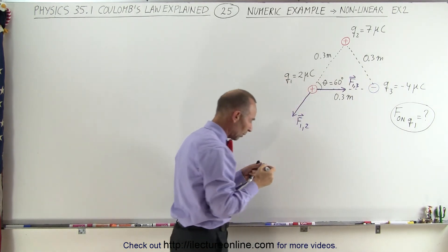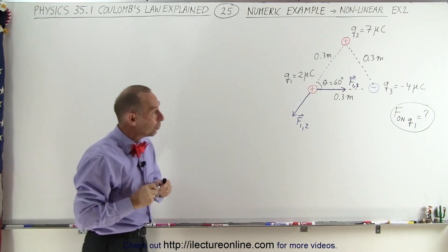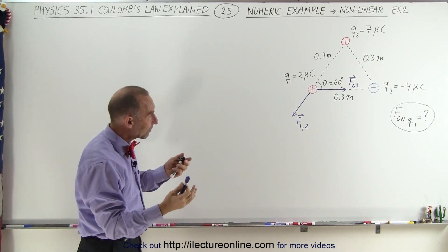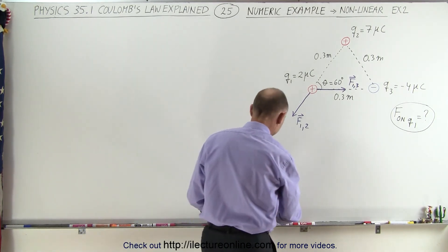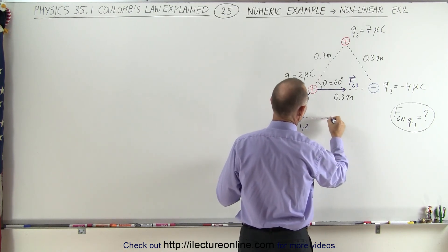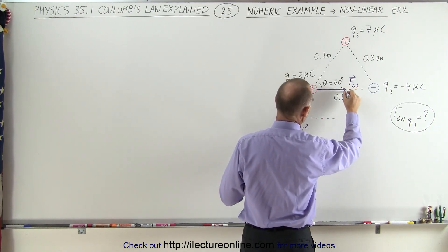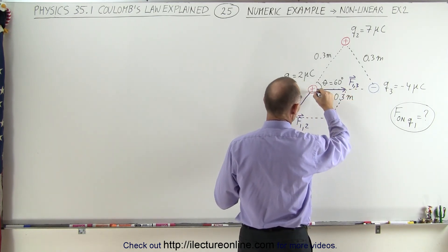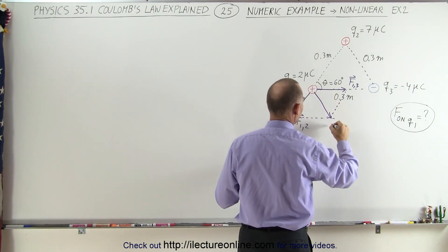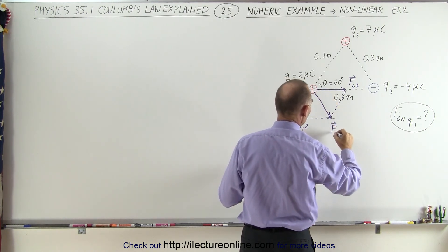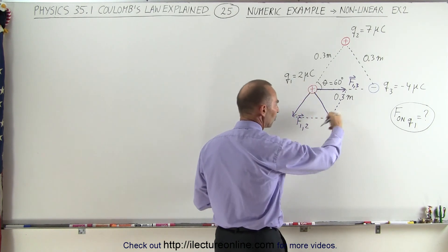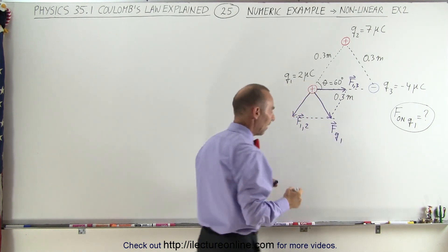Of course, it's a vector quantity. And you can see then, when you want to find the resultant, you have to add those together. This is what the resultant will look like. So this will be F total on Q1, and that is what we're trying to find.